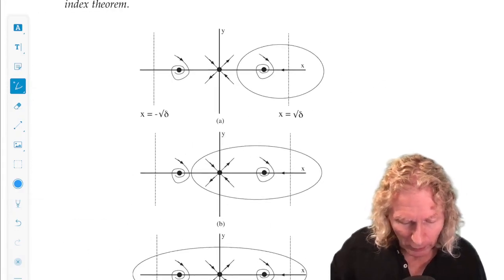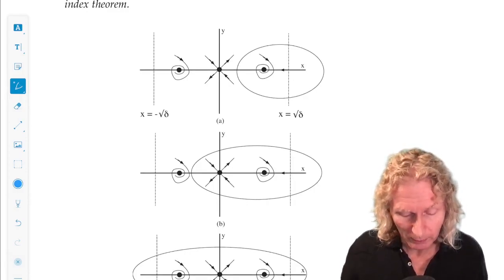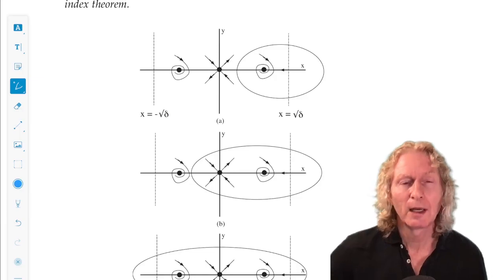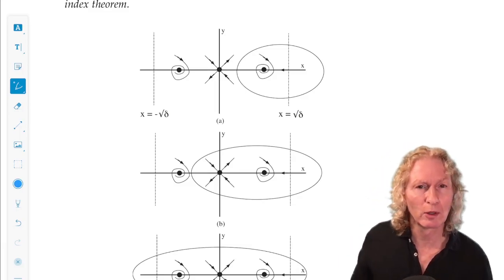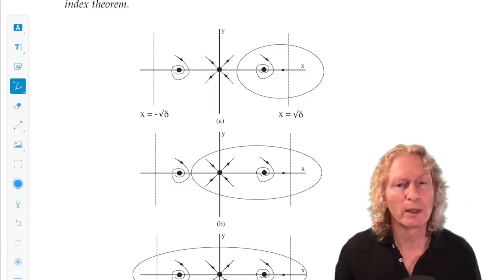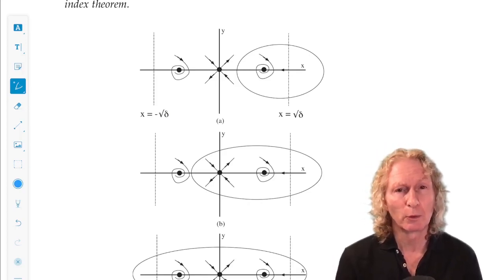So delta, the vertical lines lie outside the equilibrium points. And then we can ask ourselves, okay, where could there possibly be periodic orbits? Well, the only way we can have periodic orbits is if they overlap these regions.